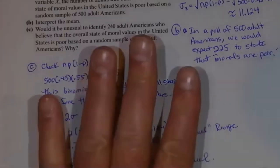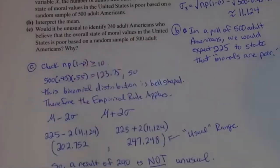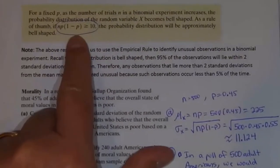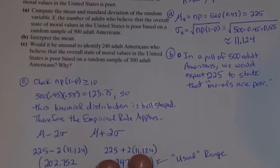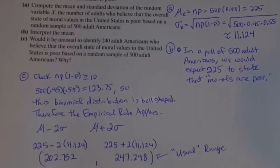You can only apply the empirical rule this way if you've confirmed the distribution is bell-shaped. So you must check the condition N times P times 1 minus P is greater than or equal to 10 before using the empirical rule.